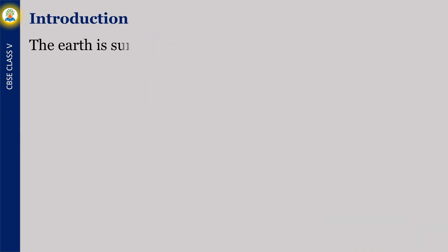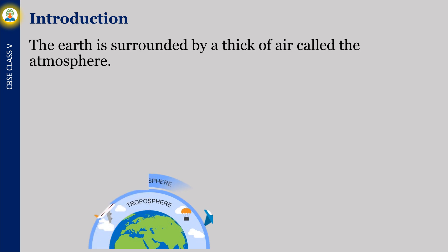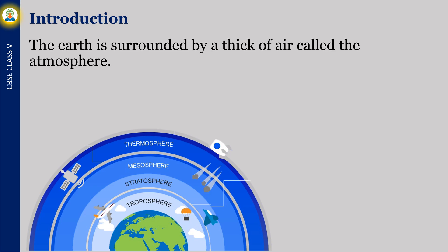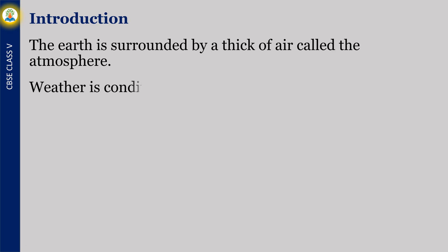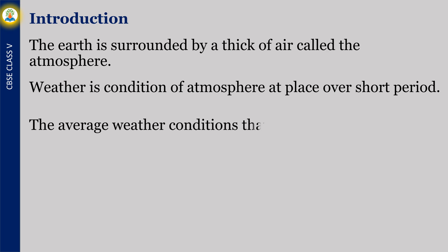The earth is surrounded by a thick layer of air called the atmosphere. Weather is the condition of the atmosphere at a place over a short period. The average weather conditions that prevail over a large period is called climate.